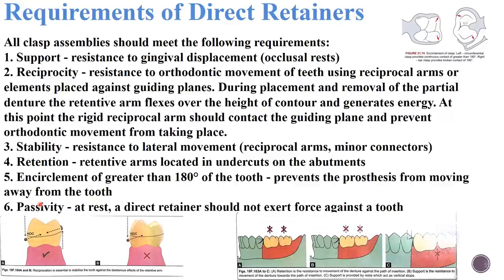Next is reciprocation — the mechanism by which lateral forces generated by the retentive arm passing over the height of contour are counterbalanced by the reciprocal arm. Reciprocation is the resistance to orthodontic movement of the tooth. During placement and removal, the retentive arm flexes over the height of contour, and the rigid reciprocal arm contacts the guiding plane to prevent orthodontic movement.